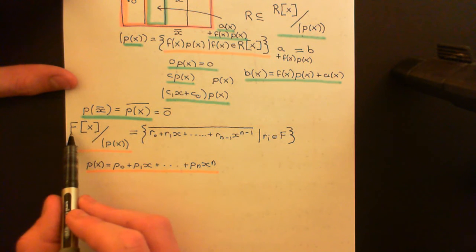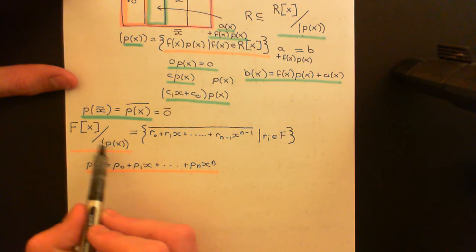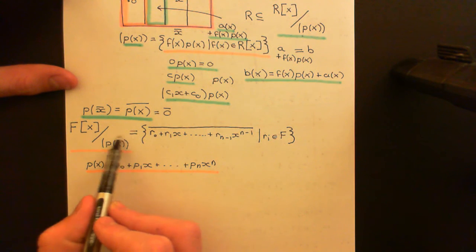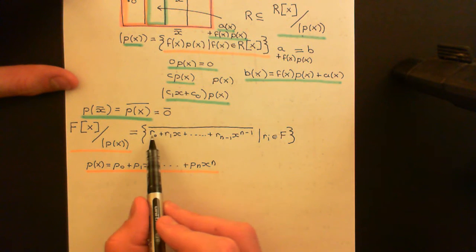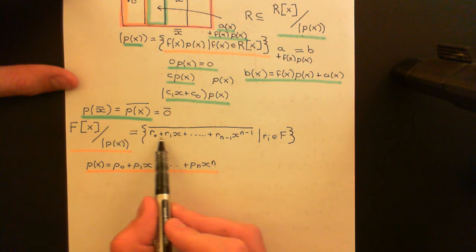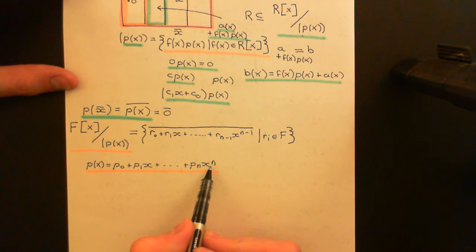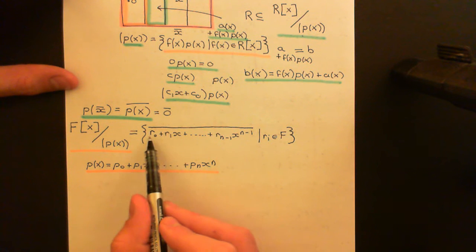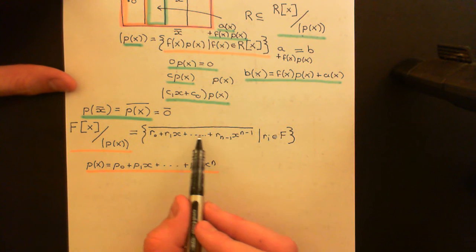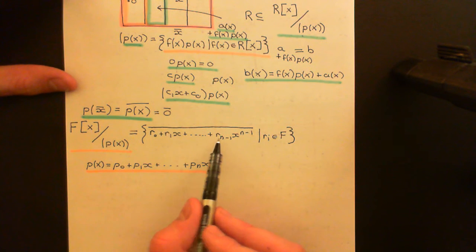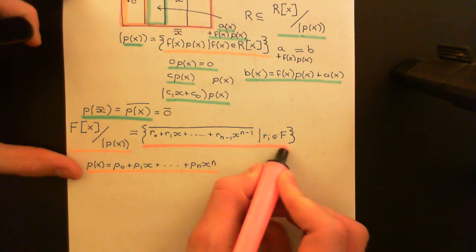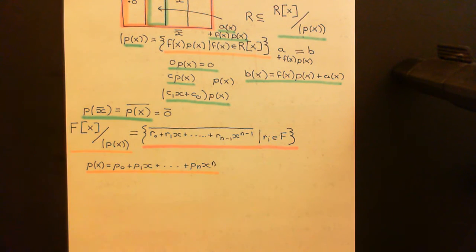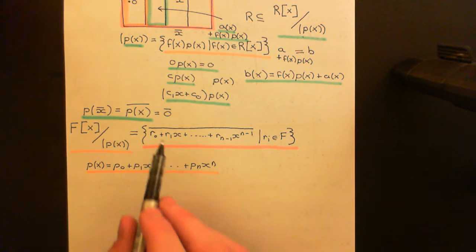When we partition up the polynomial ring into the cosets of the principal ideal generated by P of X, we can represent each one of the cosets by a polynomial that has degree strictly less than the degree of P of X — so strictly less than N. All of these polynomials represent a different coset. We will add these in the normal way that you would add polynomials, adding the coefficients component-wise.